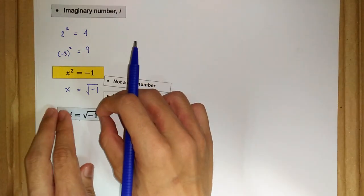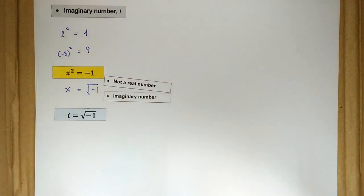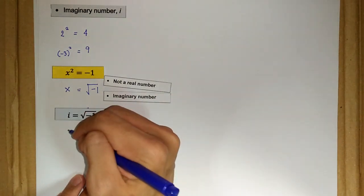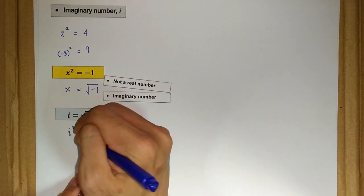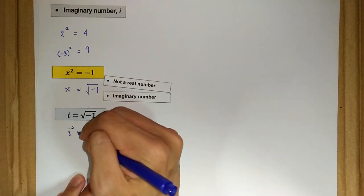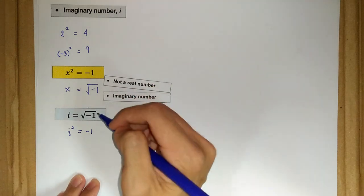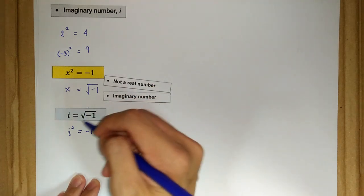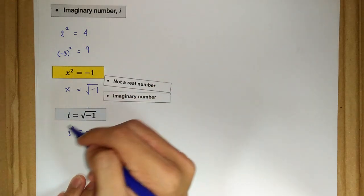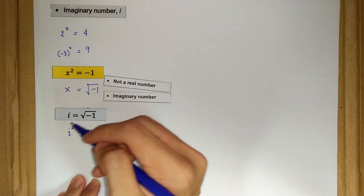i is equal to the square root of negative 1. From here, we also have i squared. Therefore, i squared is just equal to negative 1.